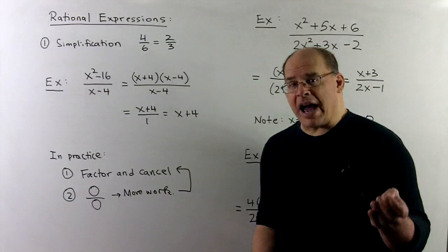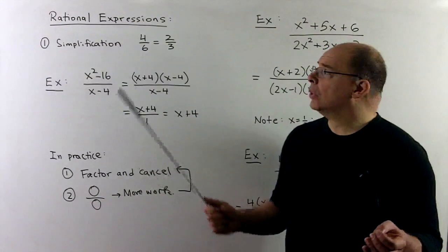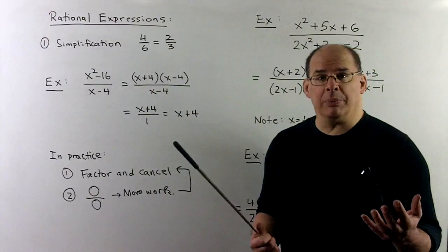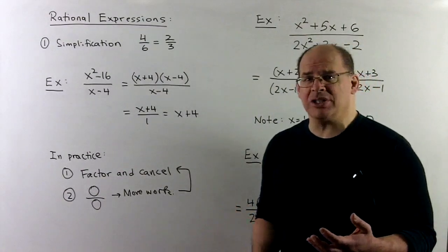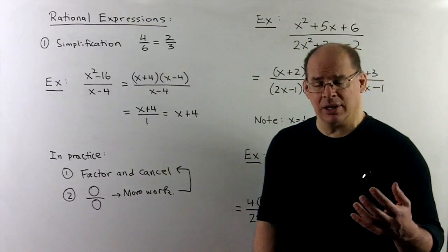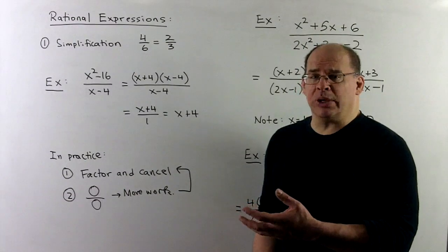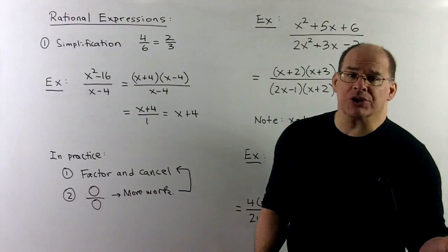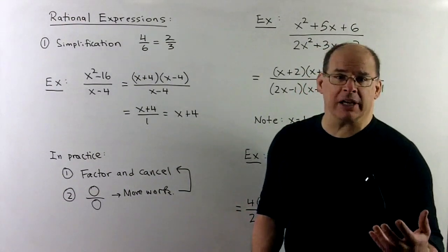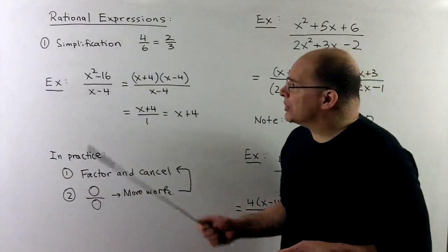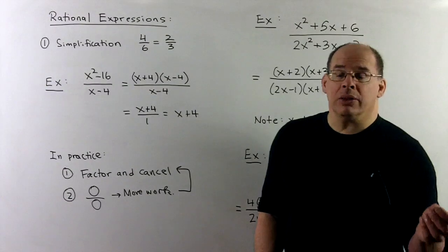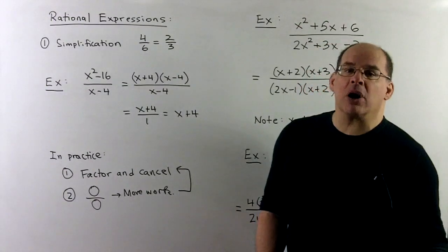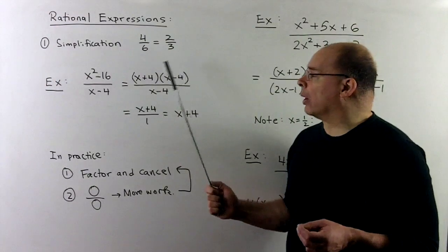So that's all we'll do with rational functions for now. What we're more interested in going forward is trying to work with rational expressions. So the px over qx, they're going to be analogs between those and the rational numbers. So how do we do the arithmetic?